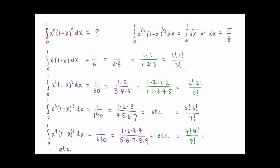And so here I've filled in all the results all at once, and it would seem likely, anyway, that the general answer for the definite integral from zero to one of x to the n times one minus x to the n is n factorial times n factorial over two n plus one factorial.